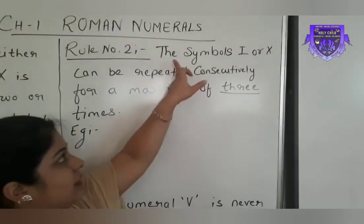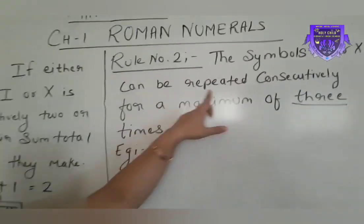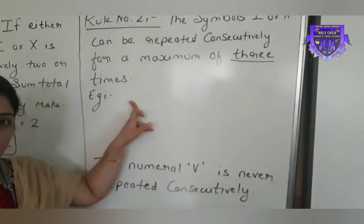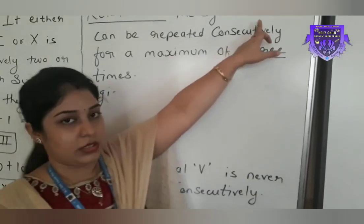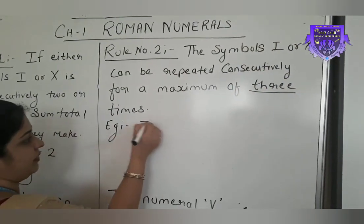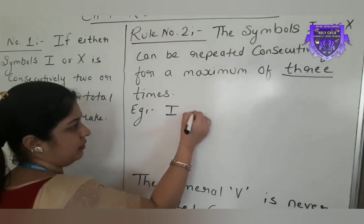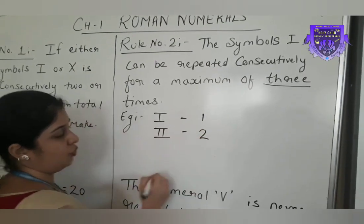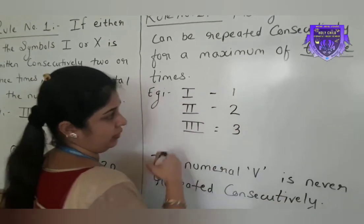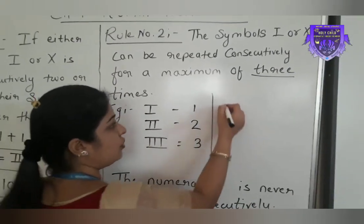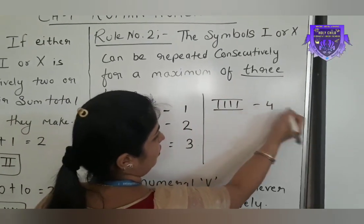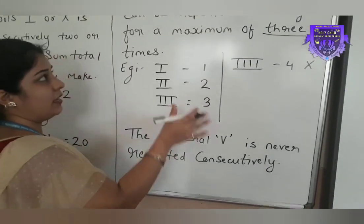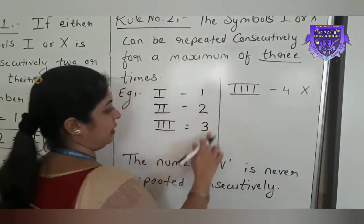Now, number 2: the symbols I or X can be repeated consecutively, continuously, for a maximum of three times only. Let's see with the example. One times I equals 1. Two times I equals 2. Three times I equals 3. But can I use four times I for four? No. This is wrong. Four is written in another way, that I will tell you later. The rule is maximum three times — you can use the symbols I and X.